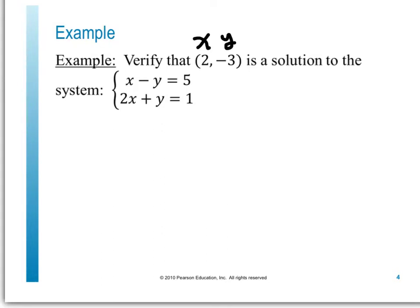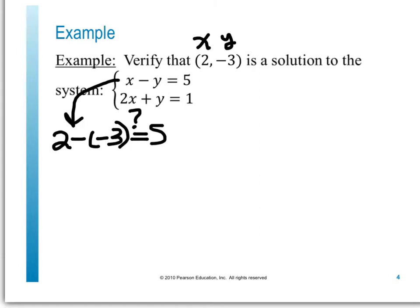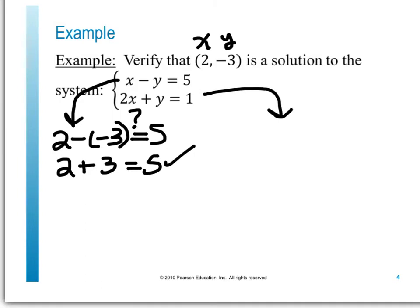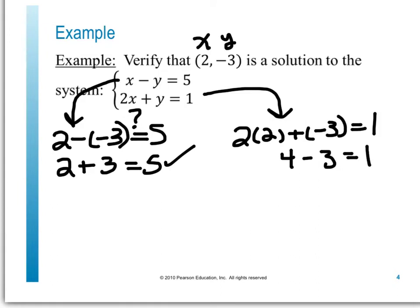For x minus y equals 5, I get 2 minus negative 3, which equals 2 plus 3, and that definitely equals 5. So I'm halfway there. Now for the second equation, plugging in 2 for x and negative 3 for y, I get 4 minus 3, which is positive 1. Since both equations are true, this is a solution to the system, and this gives us a way to always check our solutions.